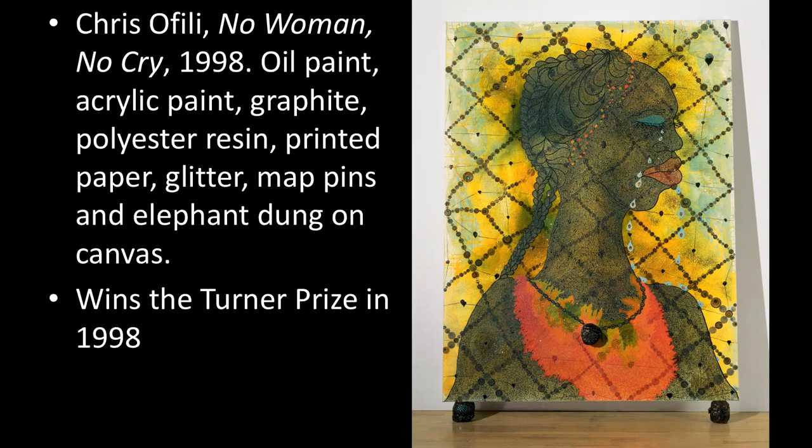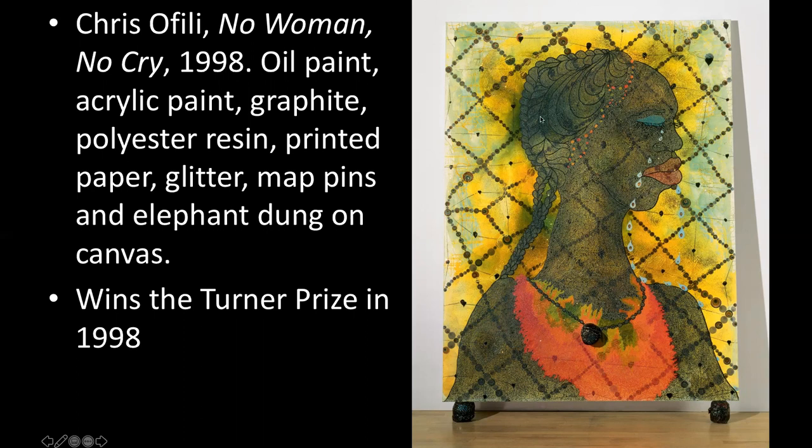This one is clearly not about blasphemy — it's talking about something else. When we get in close we can see the tears falling from the figure's eyes. Inside is a picture of Stephen Lawrence, a Jamaican immigrant murdered in London. The diaspora community of Black people in London is treated in a similar way to what you see in big cities in the United States — there is a lot of police violence against Black people, especially those living in poor neighborhoods, where police can act like an occupying army.